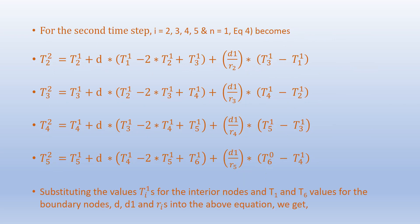For the second time step, i = 2, 3, 4, 5 and n = 1. Accordingly, equation 4 becomes T2^2 = T2^1 + D·(...) + (D1/r2)·(T3^1 - T1^1), and so on for the remaining interior nodes.